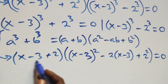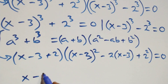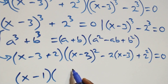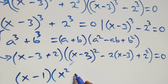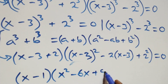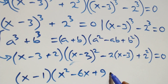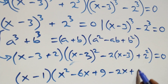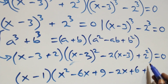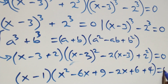At this, here we have x minus 1, into brackets, then open brackets, expansion here gives us x square, minus 6x, plus 9, then minus 2, open this bracket we have minus 2x, plus 6, then plus 2 square, that's 4, close brackets, equals to 0 here.